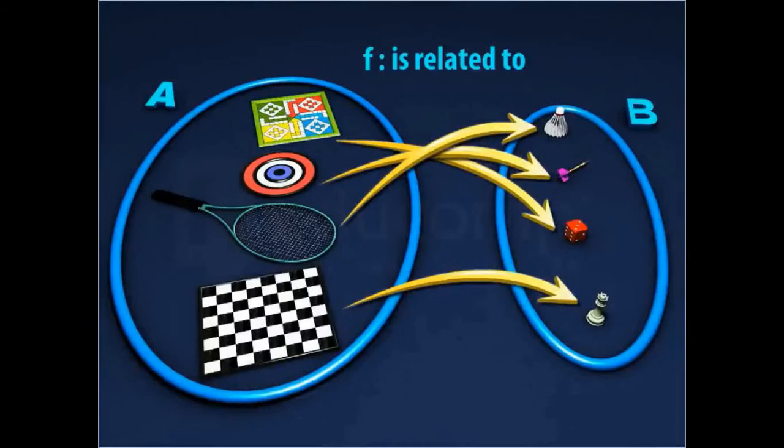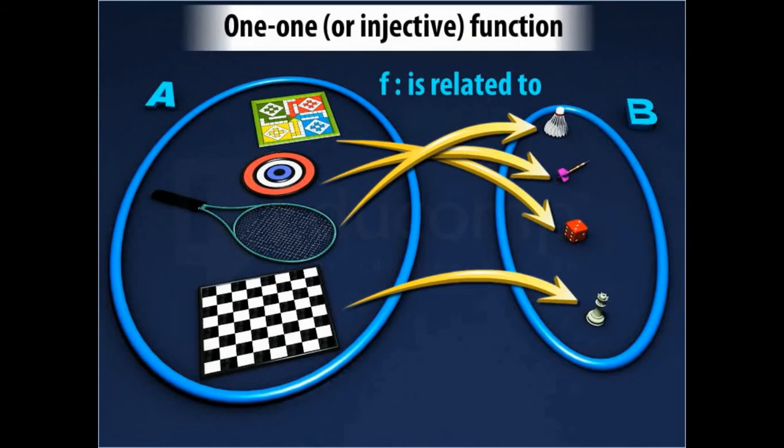Notice that no two different elements of set A have same image in set B under the given function. Such a function in which distinct elements of set A have distinct images in set B is called a 1-1 or injective function.